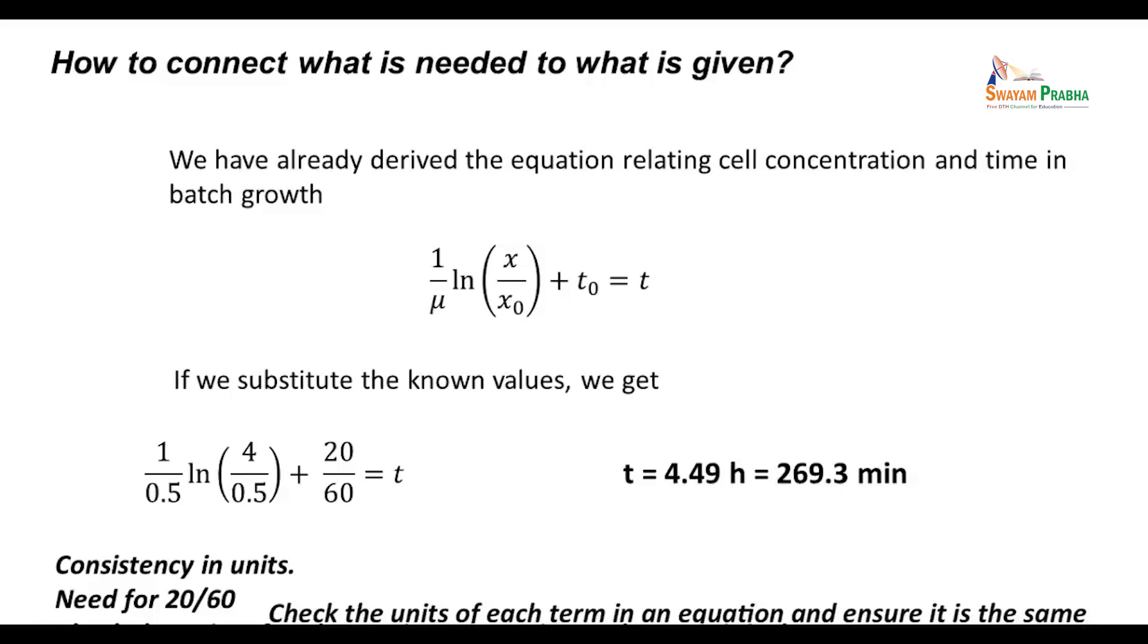So this is part A: the time required to reach a concentration of 4 gram per liter, starting with a concentration of 0.5 gram per liter, when the specific growth rate was 0.5 hour inverse.